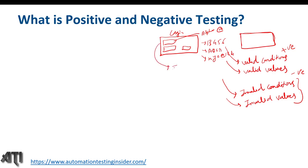If the field does not accept a special character like '#', entering something like 'abc#321' is a negative test case for the username field. That is the difference between positive and negative test cases for this input field.